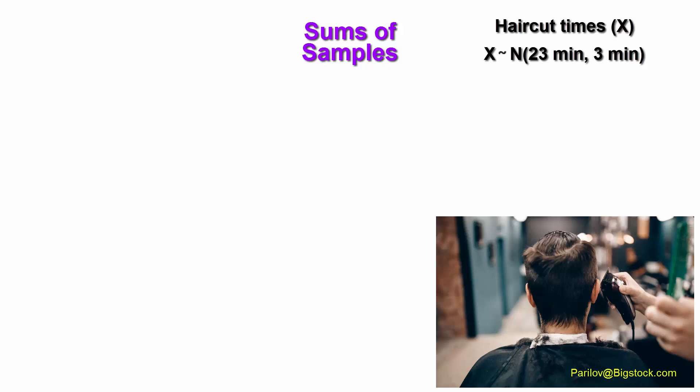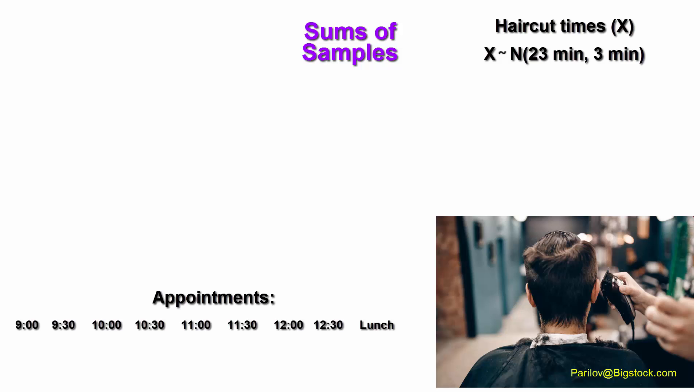A hairstylist specializes in men's haircuts. The times for haircuts are normally distributed with a mean of 23 minutes and a standard deviation of 3 minutes. The stylist is trying to optimize the schedule of appointment times to do more haircuts in one day and make more money. Typically, 8 haircuts are performed in a 4-hour time period using 30-minute intervals between appointment times.